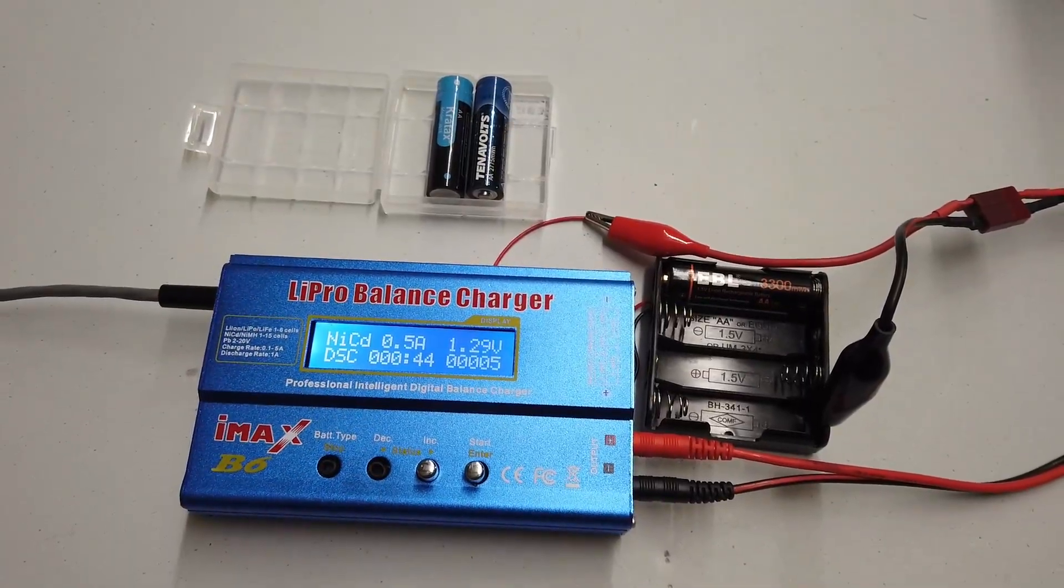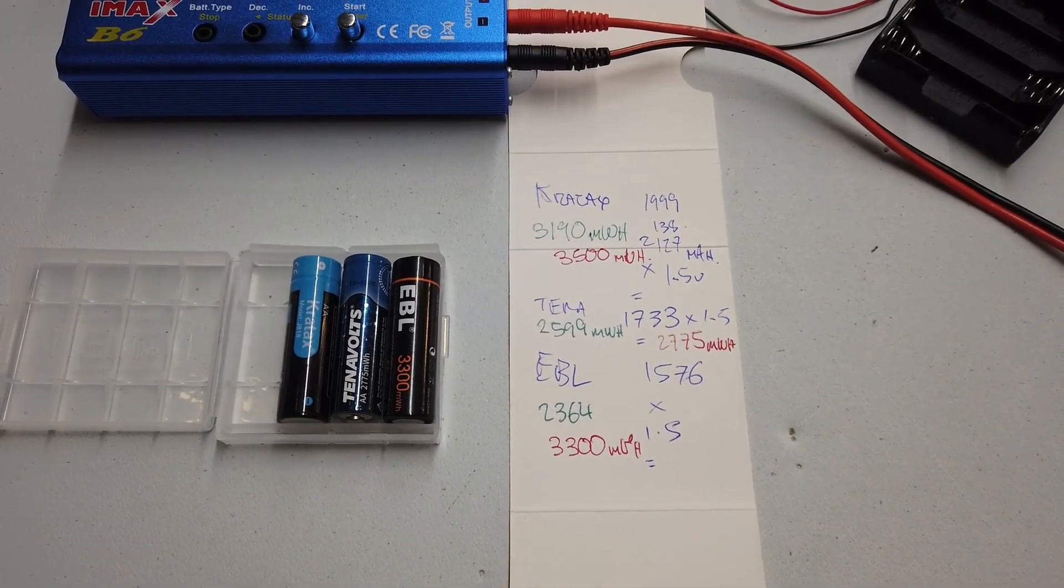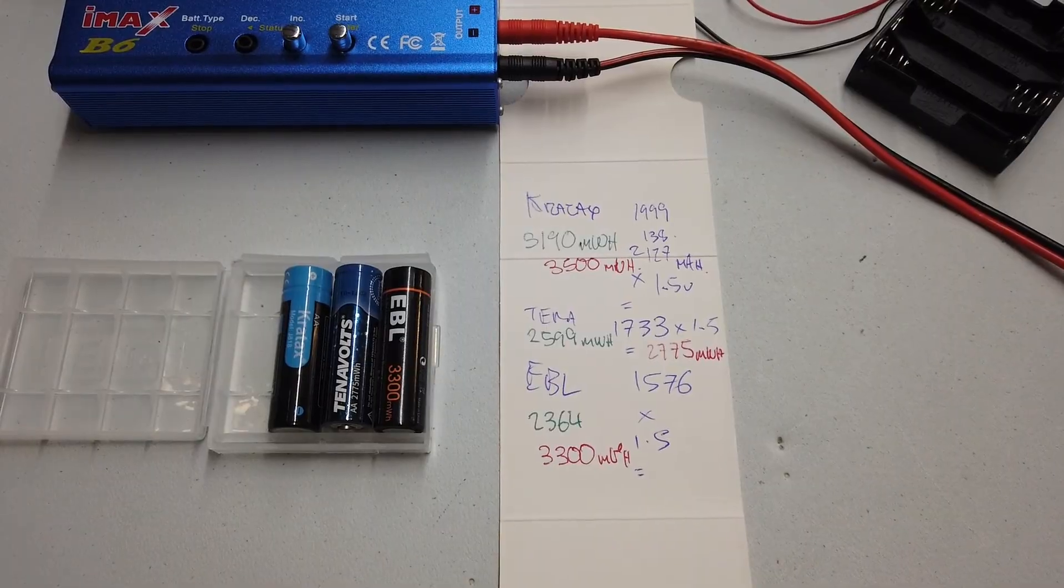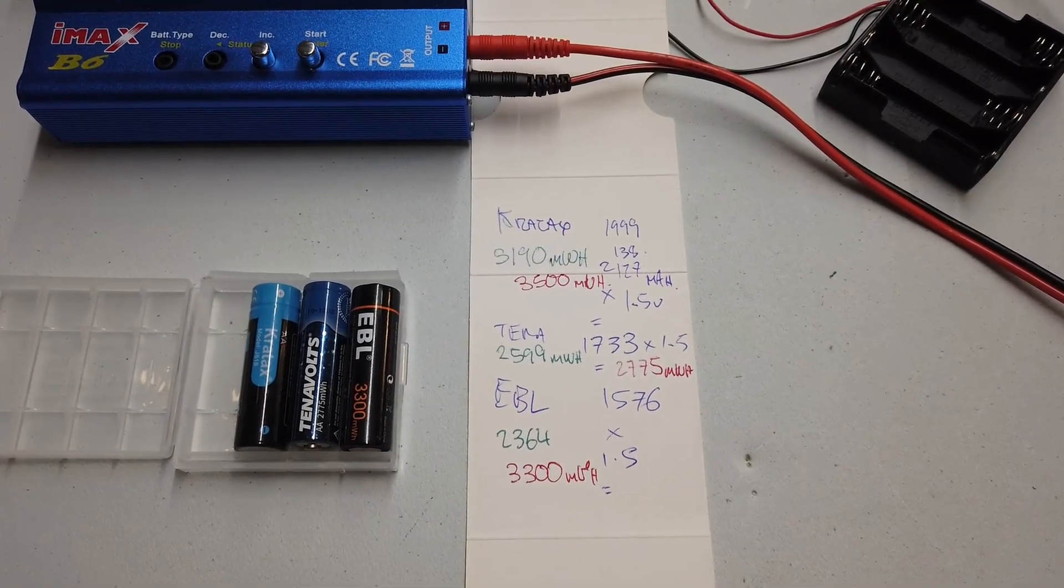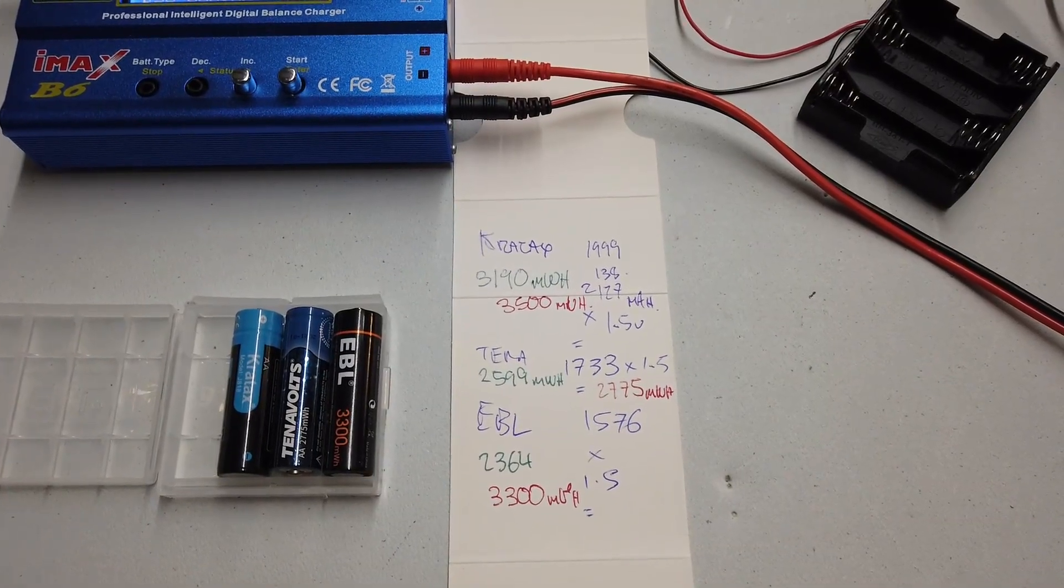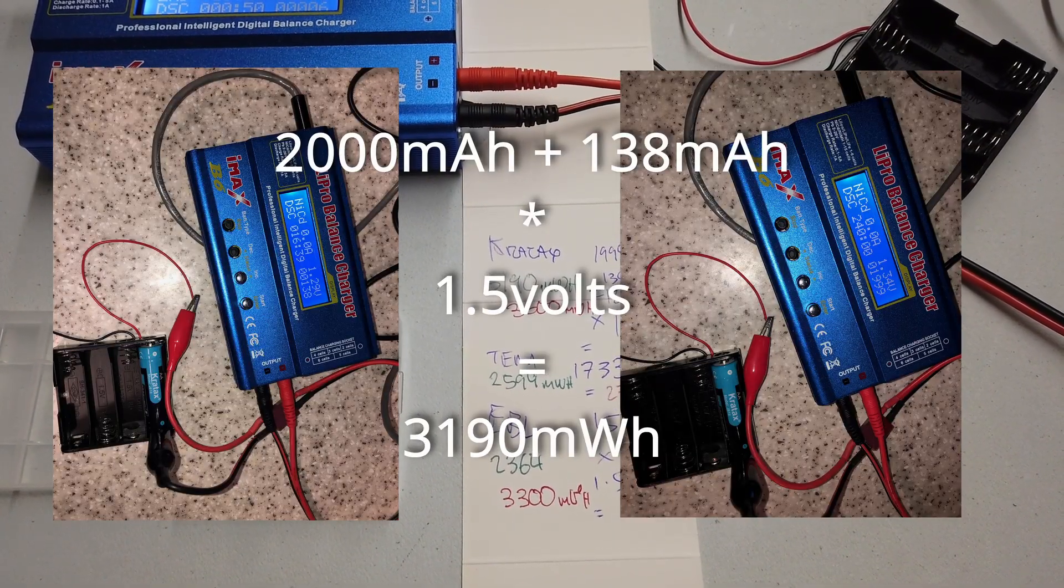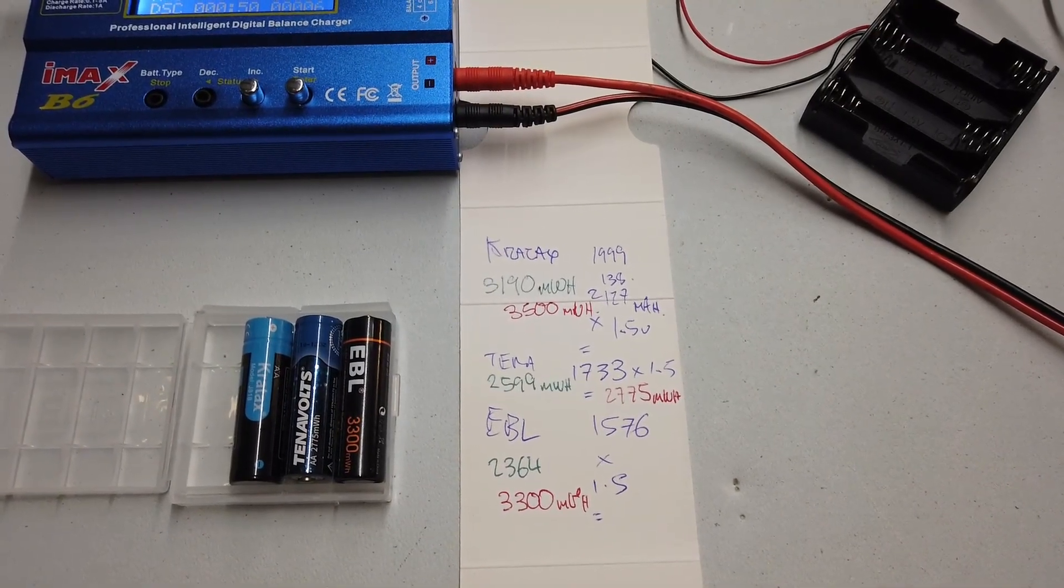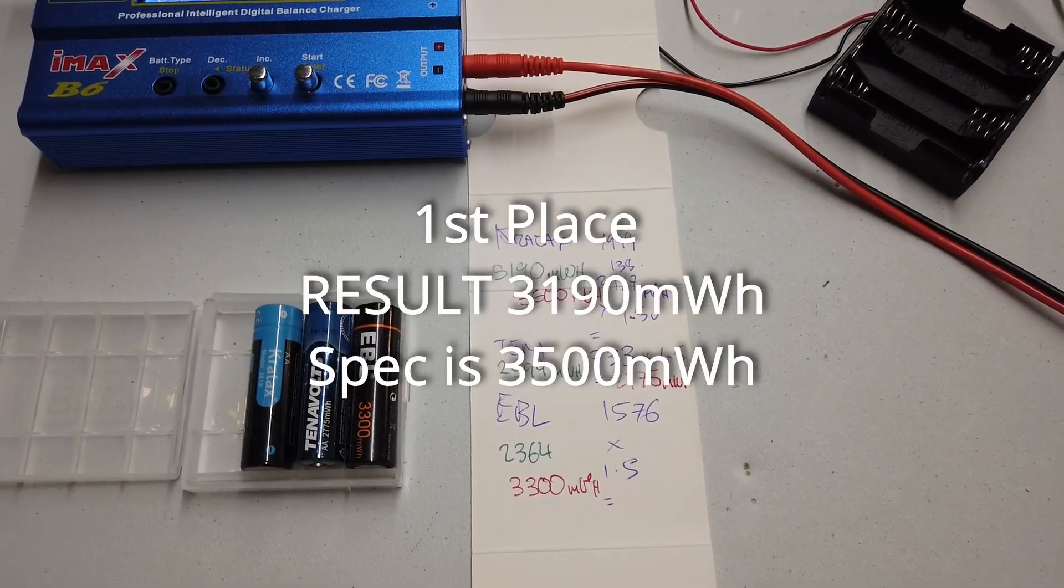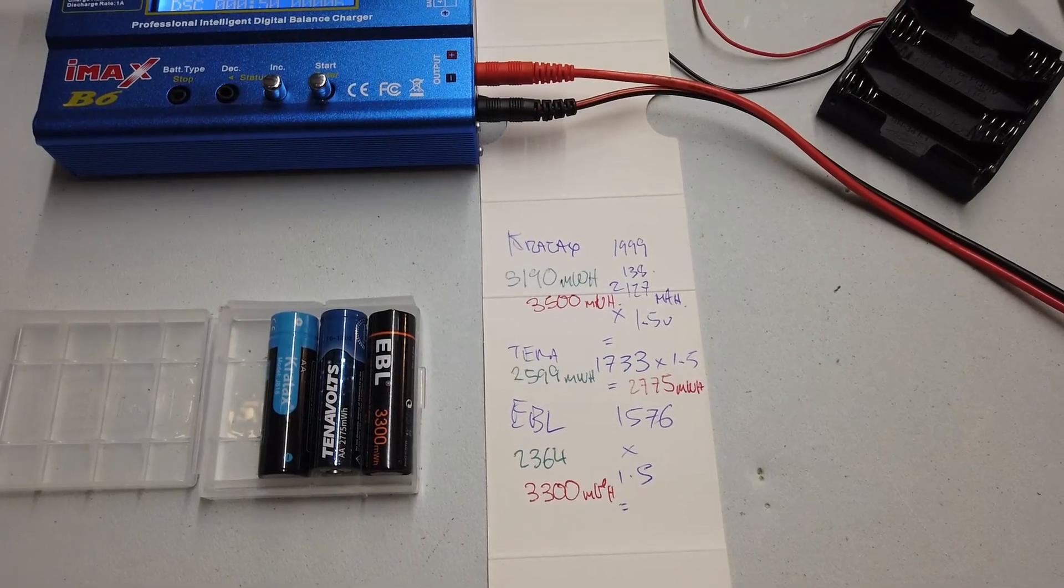Having completed the testing, I have scribbled down the results. The Kratax came in at top of the list. The manufacturer specifications suggested they would achieve 3500 milliwatt hours. The test results were given to us in milliamp hours and all we have to do is multiply that by the voltage. In the case of Kratax, we had to do two sets of tests because there was a timeout on the analyzer. So we ended up with 2127 milliamp hours, which works out if you multiply it by 1.5 volts as 3190 milliwatt hours, so about 300 shy of the 3500 milliwatt hours that was advertised by the manufacturer.